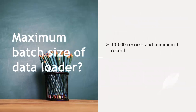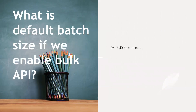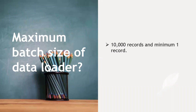The maximum batch size of Data Loader is 10,000 records and the minimum is 1 record. If we enable Bulk API, the default batch size is 2,000 records. These are frequently asked questions in real-time interviews — for example, what is the default batch size when Bulk API is enabled: 2,000 records.